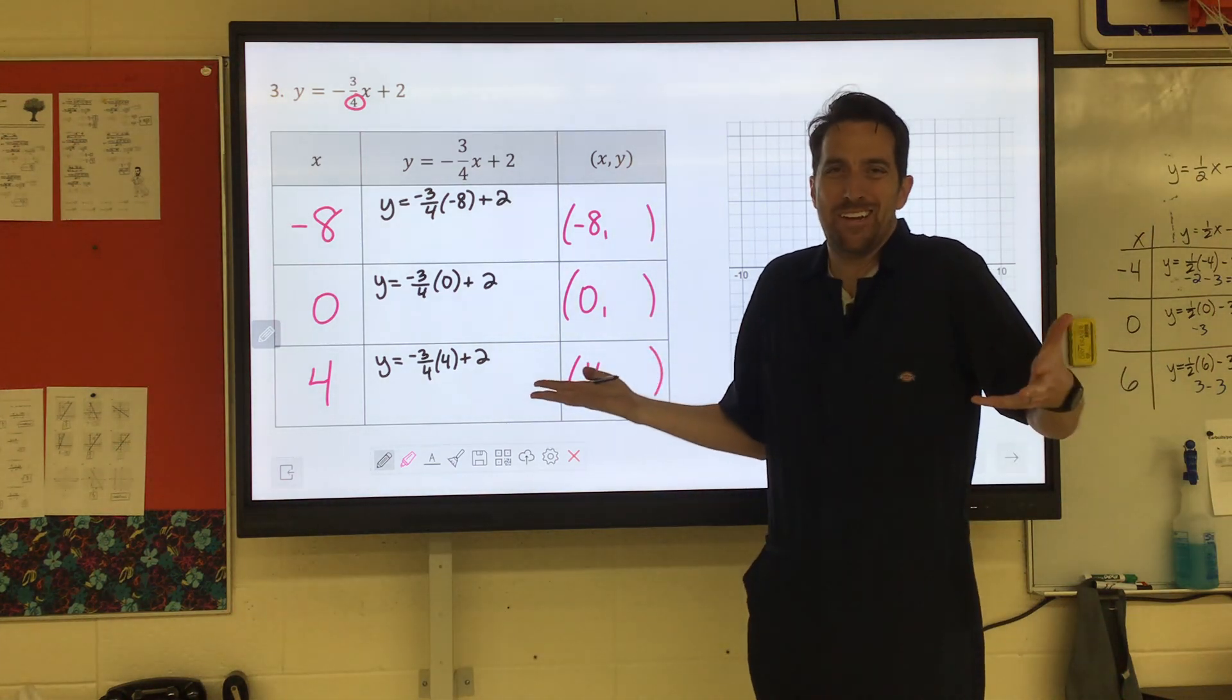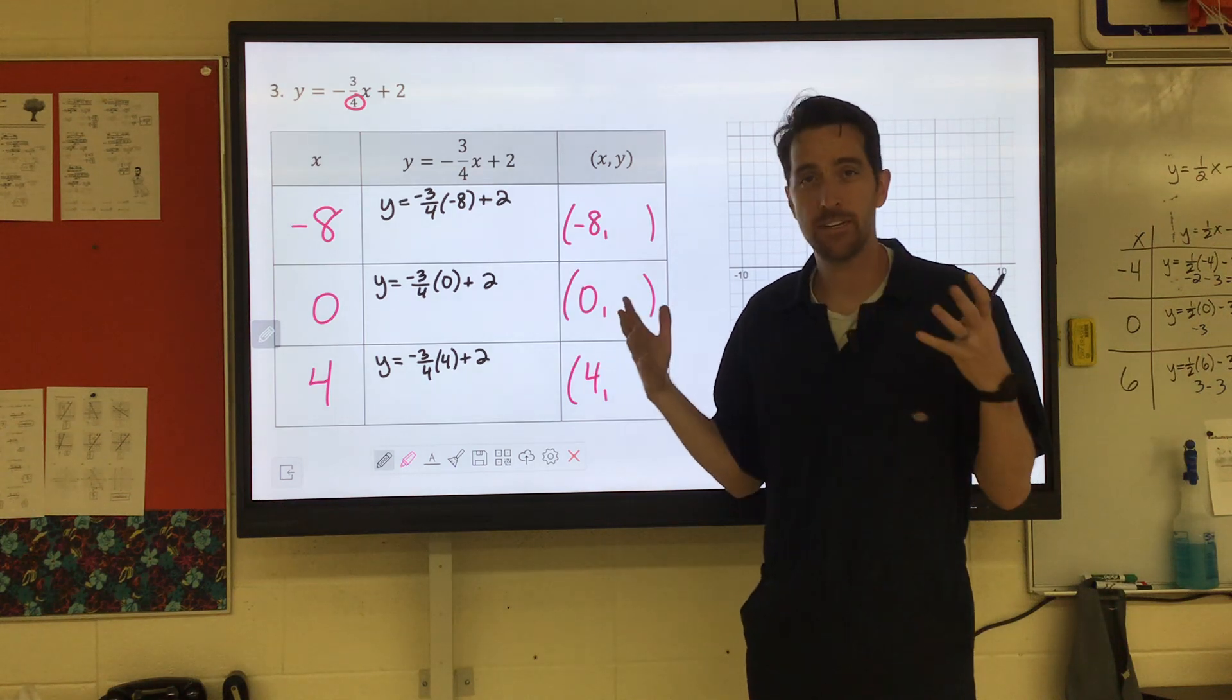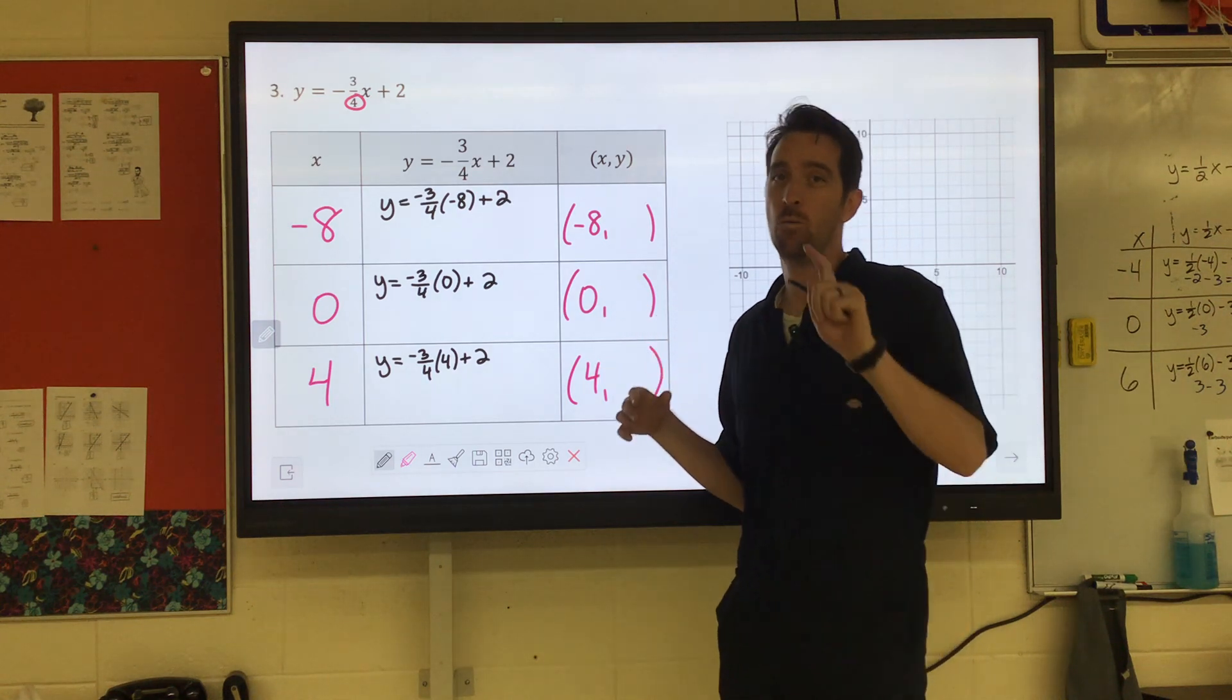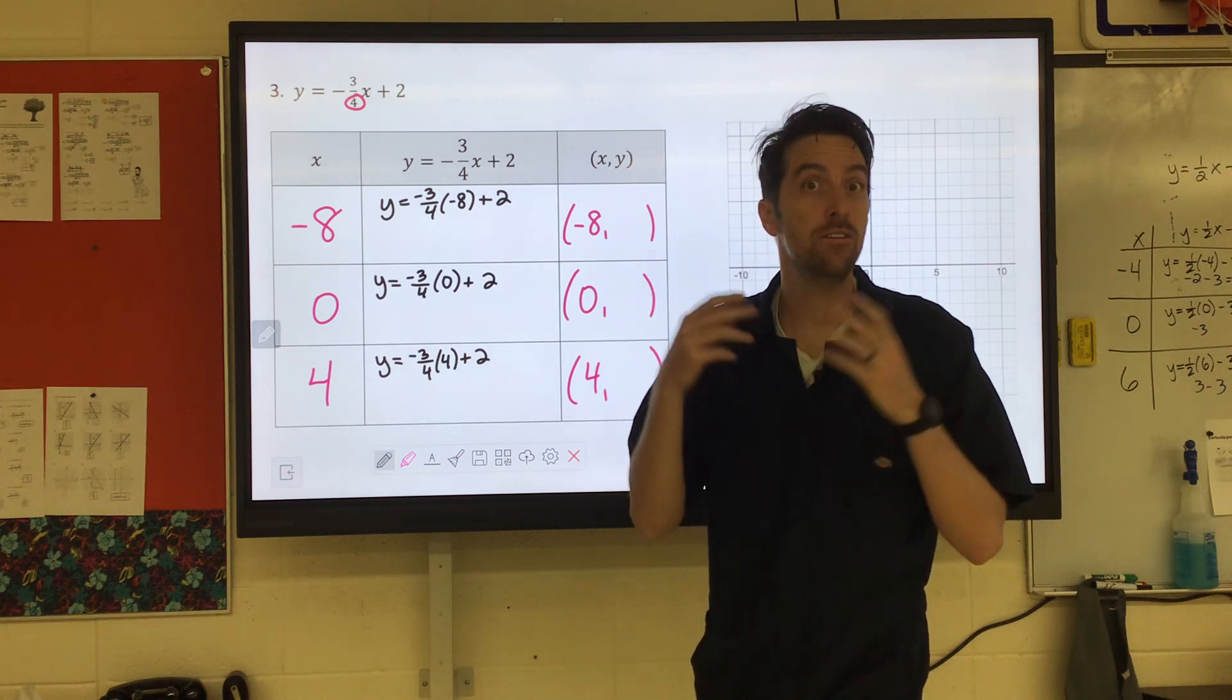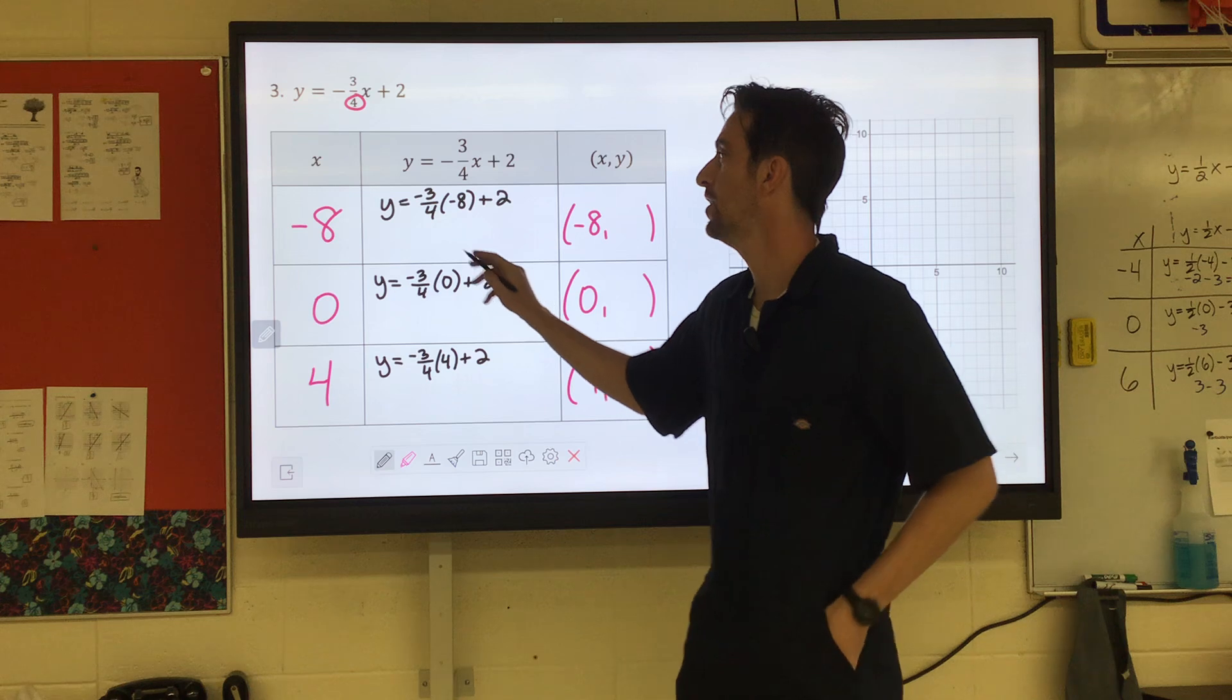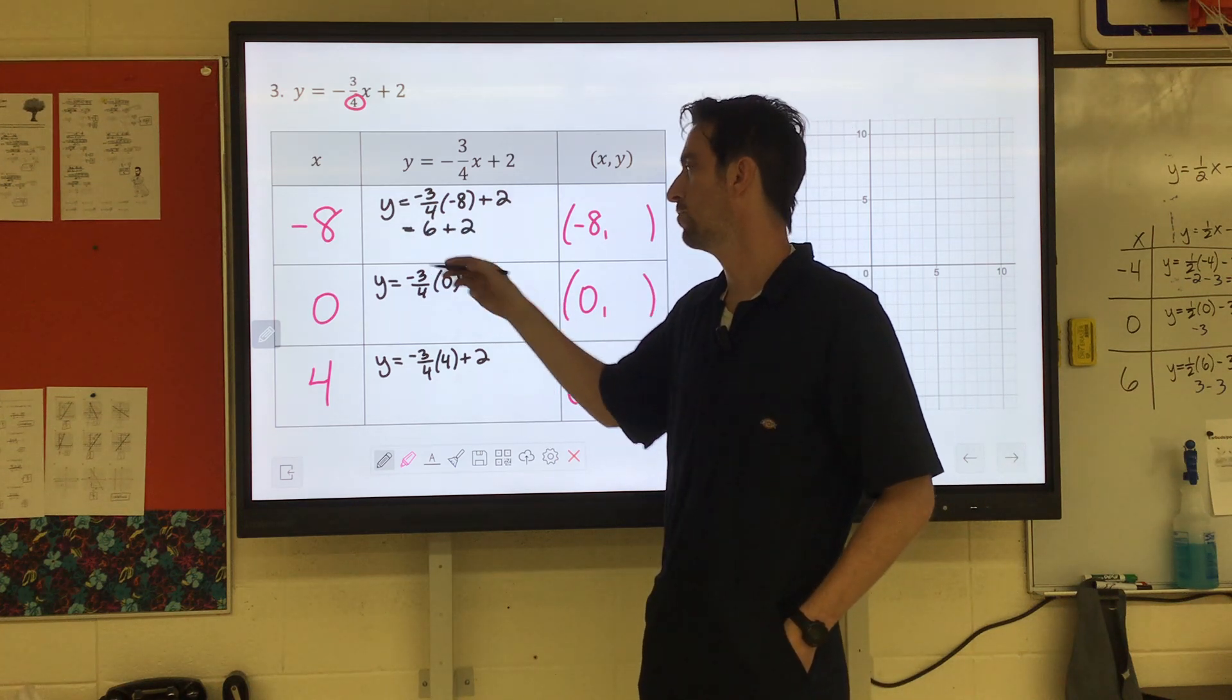We'll simplify these, we'll solve them, and then we'll get our y coordinate. Now here, negative three-fourths times negative eight, you have a negative times negative, you know that's coming positive. One-fourth of eight would be two, right? Three-fourths of eight, three times two would be positive six. So this will come out to positive six plus two, which is eight.